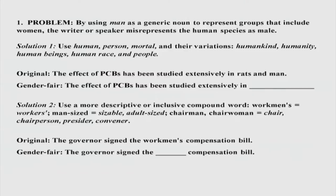The first problem is something I have discussed in my lecture — there has been a tendency for a very long time to use the noun 'man' as a generic noun to represent all human beings. One solution is to use alternatives to the word 'man' — alternatives to masculine nouns — so that we are more inclusive in our communication. Solution one is to use alternative nouns like 'human', 'person', 'mortal', or 'humankind', which include all human beings: men, women, third gender, and other genders.